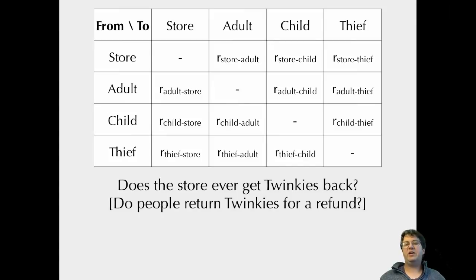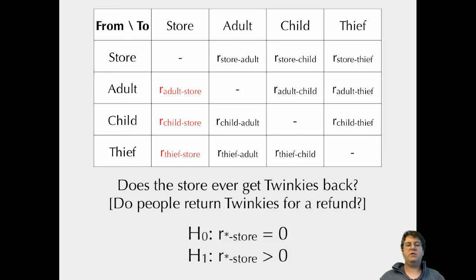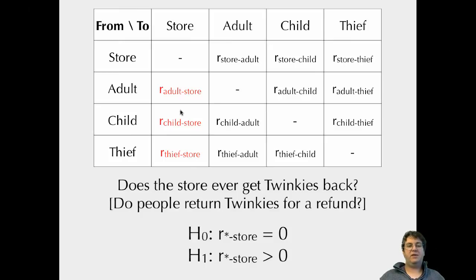Now I can start to ask questions by looking at this rate matrix. For example, does the store ever get Twinkies back — do people return Twinkies for a refund? If the rate of adult to store is zero, the adult never returns Twinkies. If it's greater than zero, the adult does return them. So I can test this by comparing a model where those rates are set to zero versus a model where they're allowed to be greater than zero, and see which model is better.